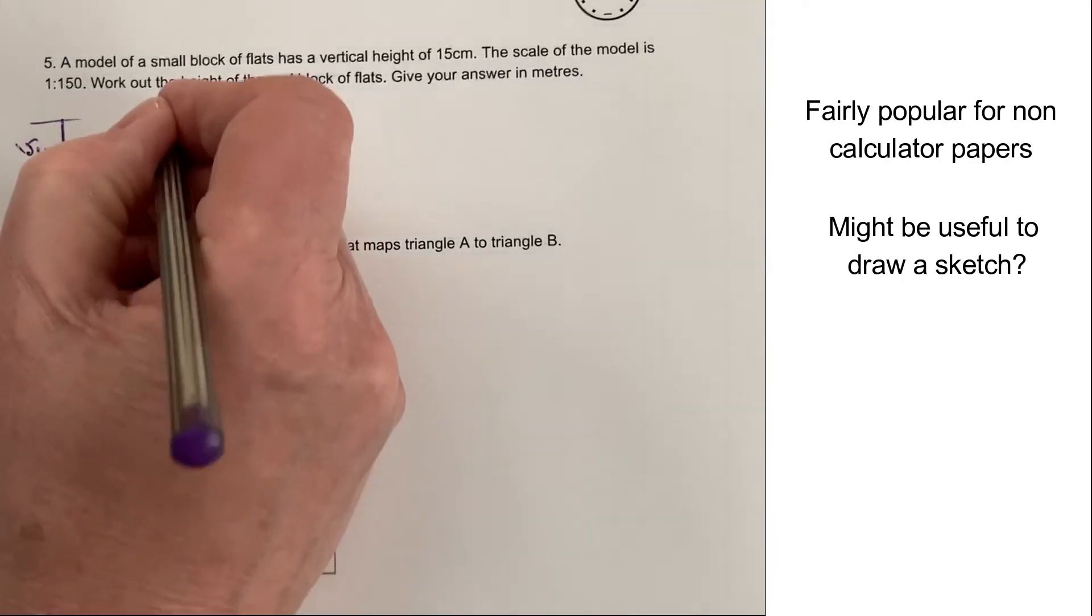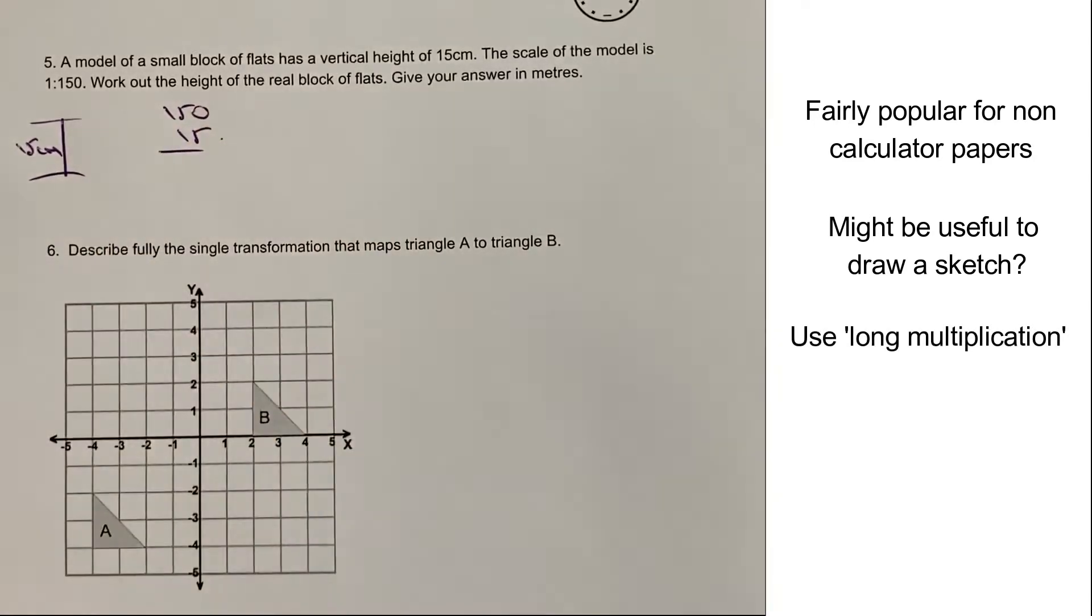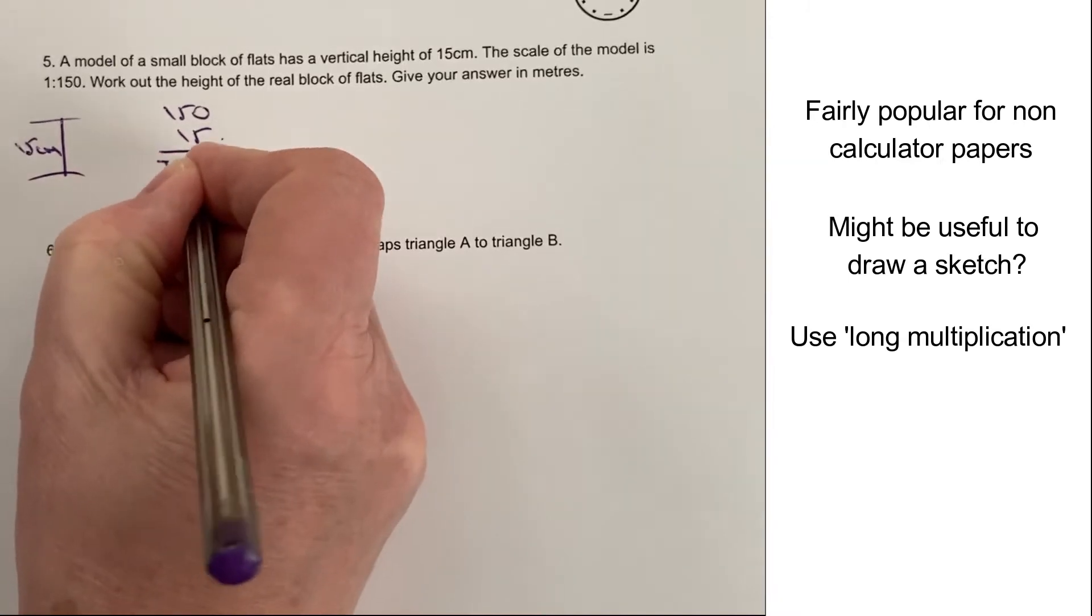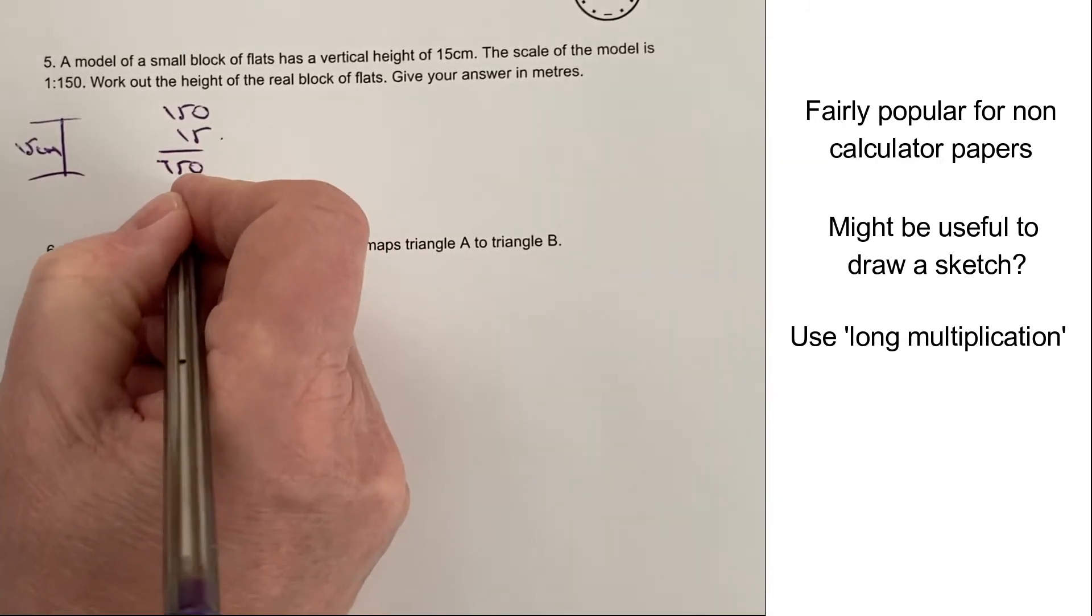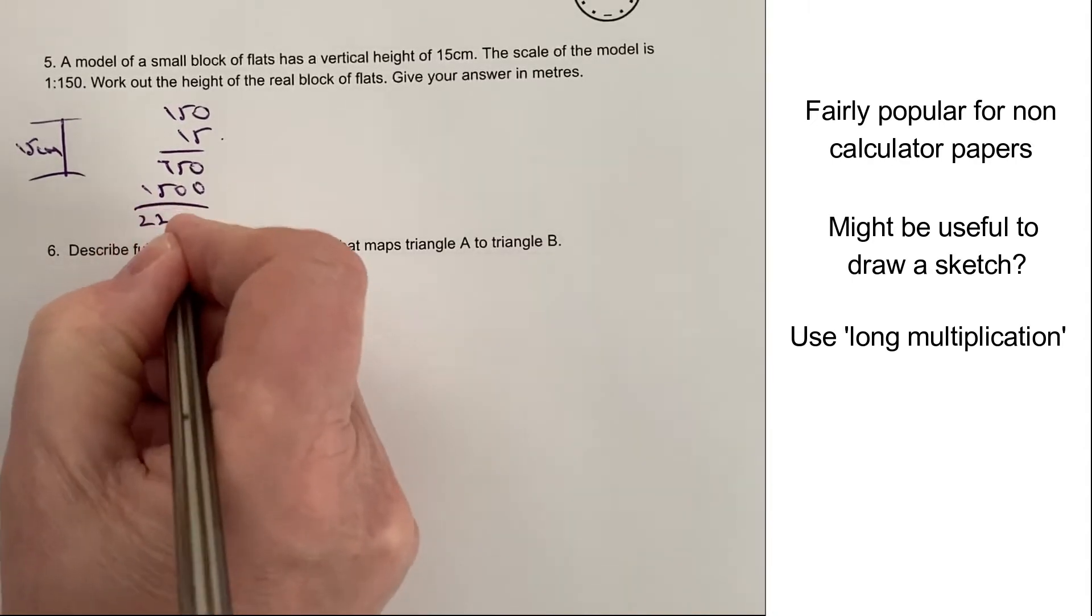So again, I'm going to do the same sort of calculation. 150 multiplied by 15, because it's 150 times bigger than 15 centimetres. So therefore, when I calculate that, I'm going to get this sort of answer, which is going to be 2250.